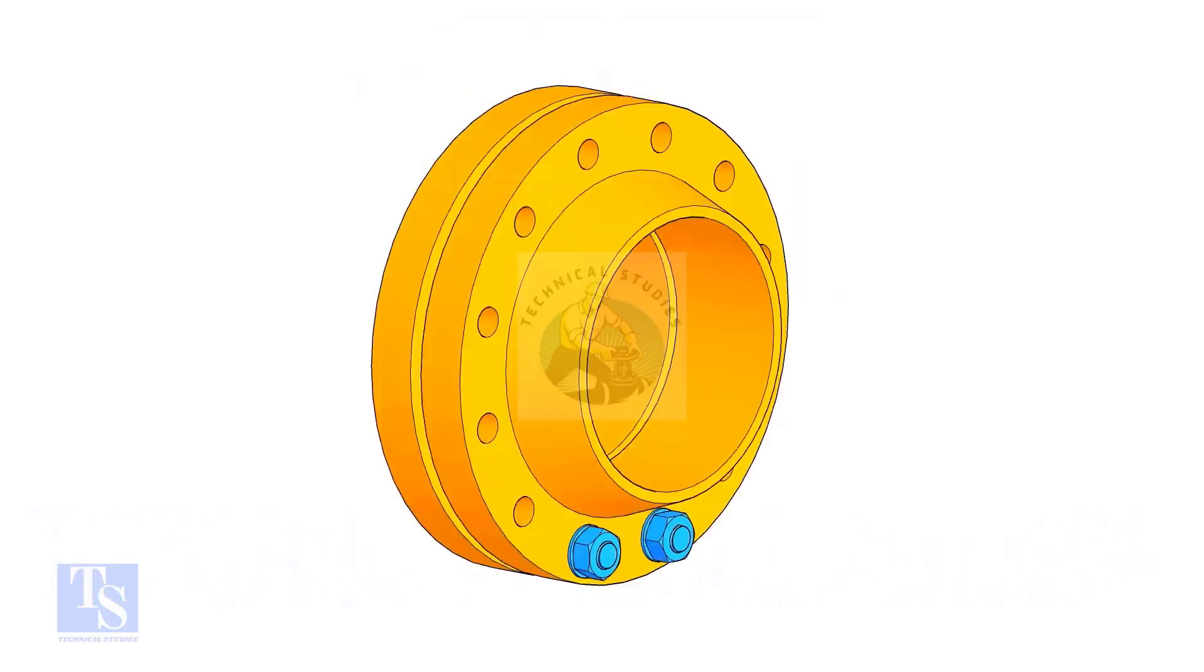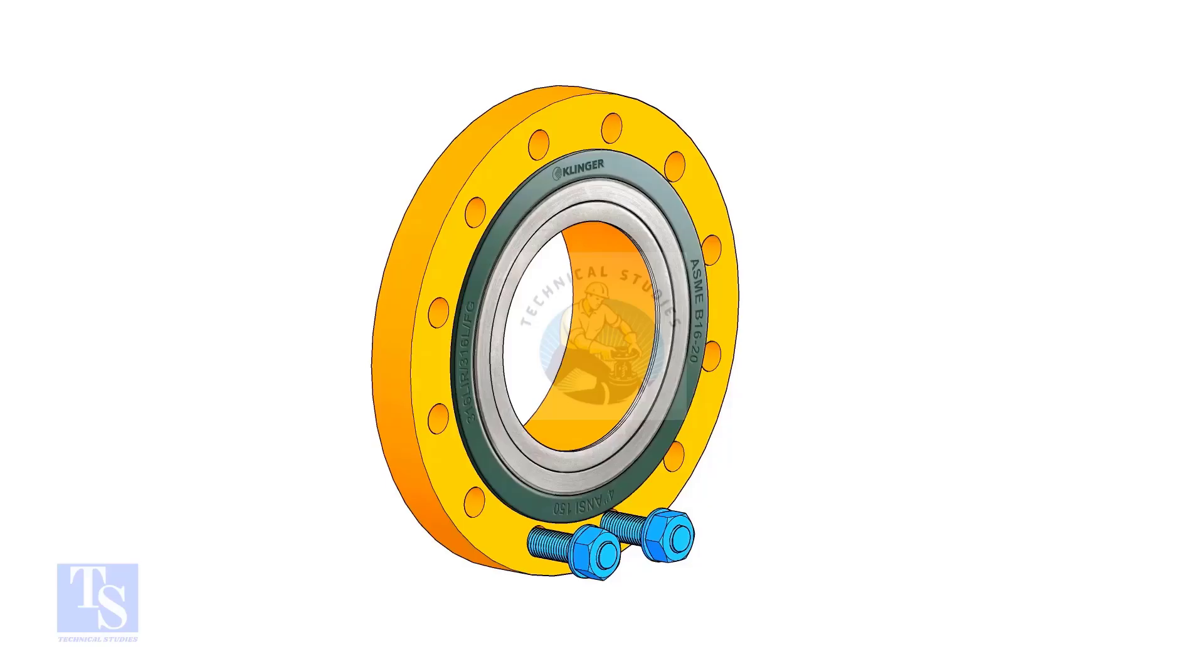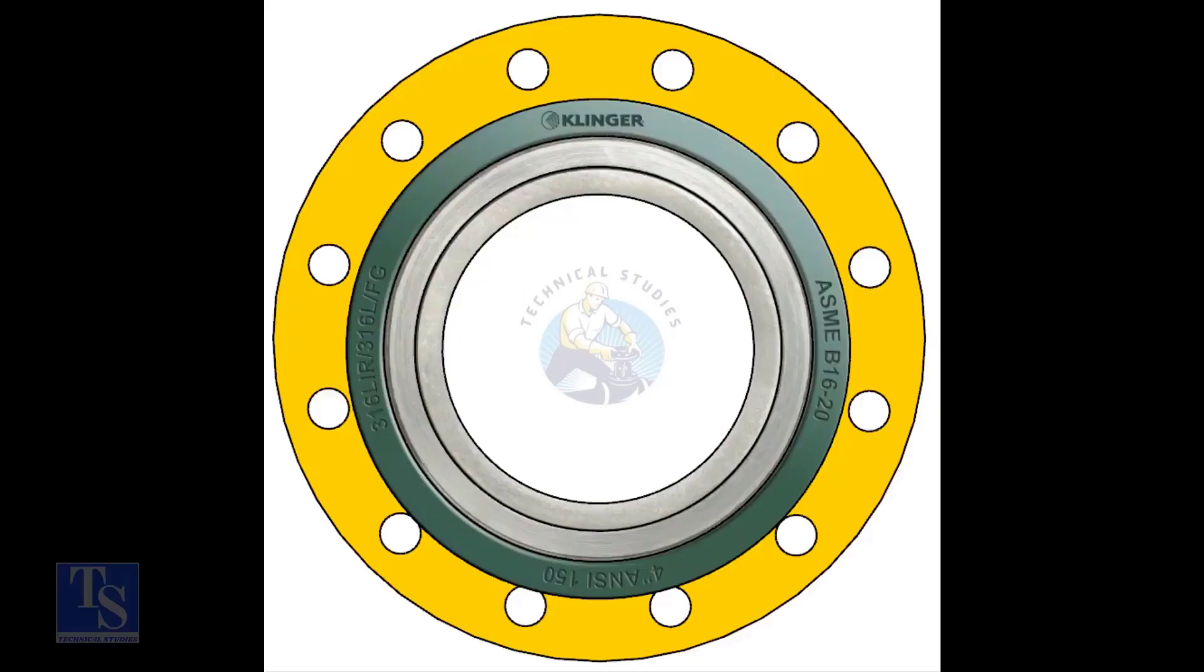Put two bolts in the adjacent bottom side holes. Put the gasket between the flanges. Now, the gasket sits eccentrically between the flanges.